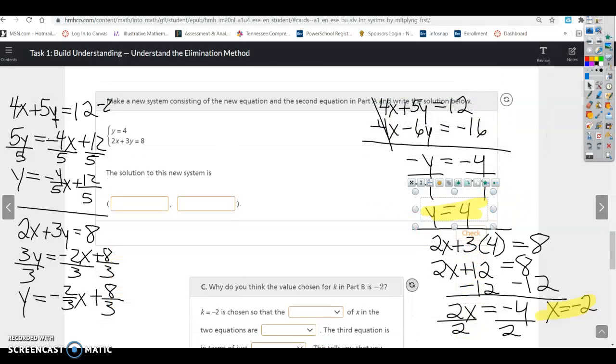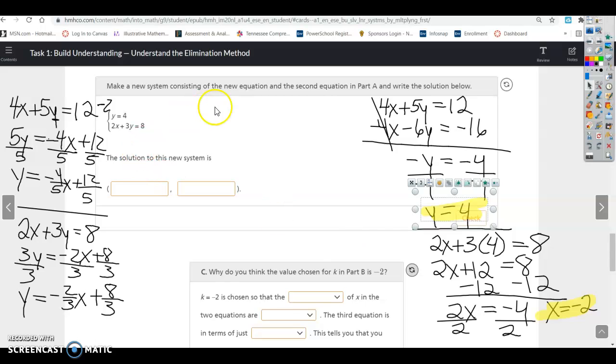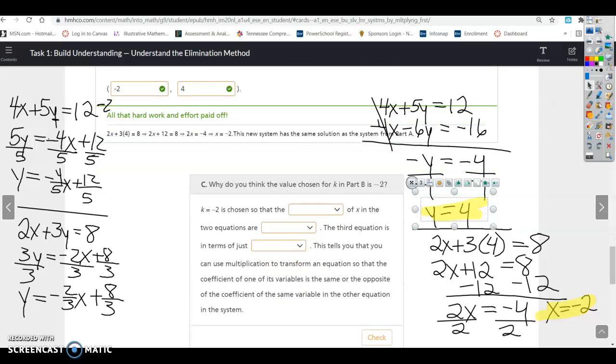The last thing. Oh no, there's a couple more things. So let's make a new system consisting of the new equation and the second one. So your new equation, they're calling it y equals 4. So y equals 4 is the solution to find y. So once you find y, you can plug that back into the second equation. So the solution of this new system is, if you plug 4 in here, you're going to get 12, subtract, get negative 4, divide by 2, and you get negative 2. So negative 2 and 4. So again, we get the exact same thing as we got before.